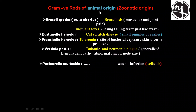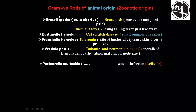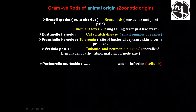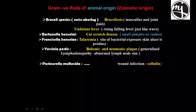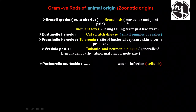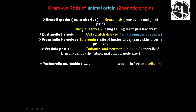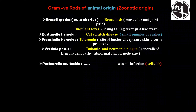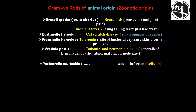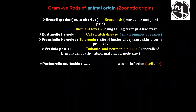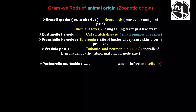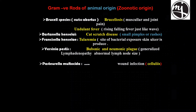Gram-negative rods of animal origin: Number 1, Brucella species (Brucella abortus). This bacteria causes brucellosis with muscular and joint pain. It is also called undulant fever — a wave-like rising and falling fever.